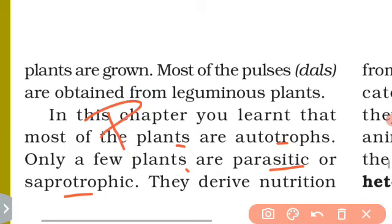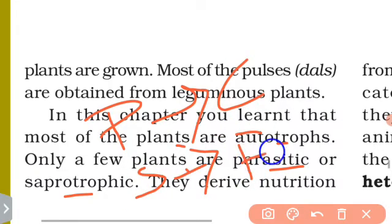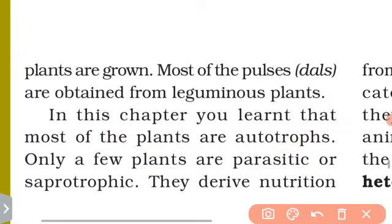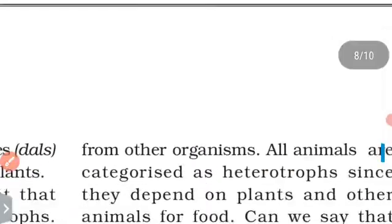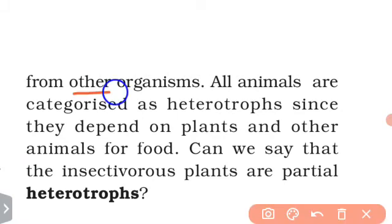Parasitic plants climb up the host and derive nutrients from it. They derive nutrition from other organisms. All animals are categorized as heterotrophs since they depend on plants and other animals for food.